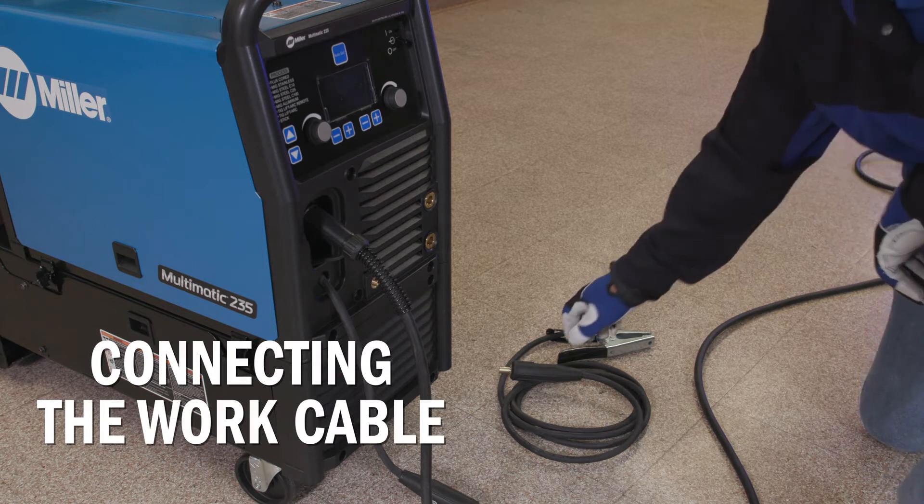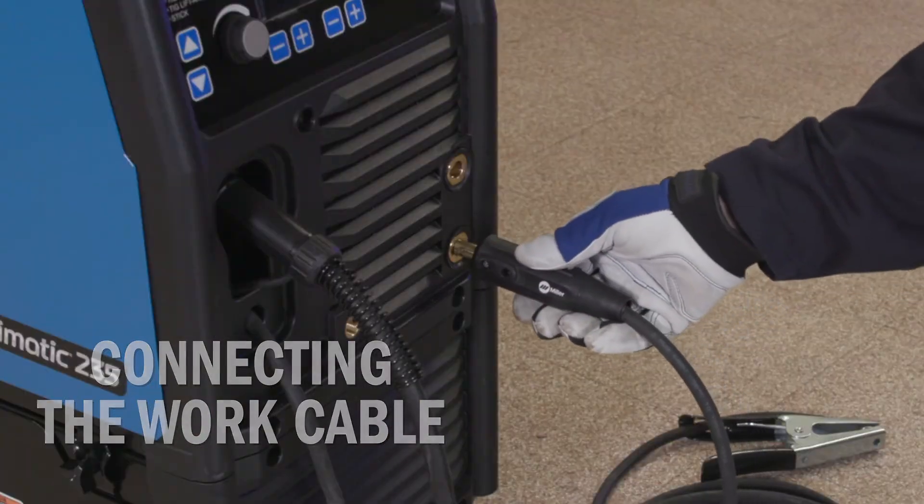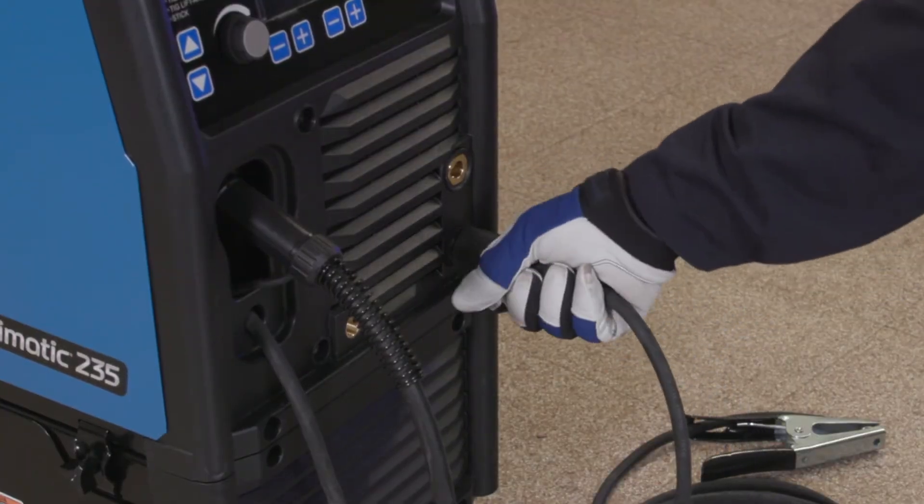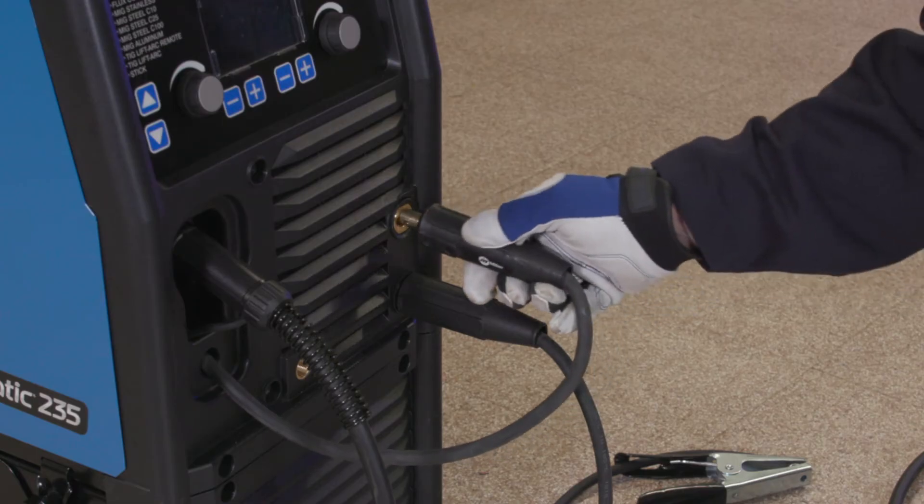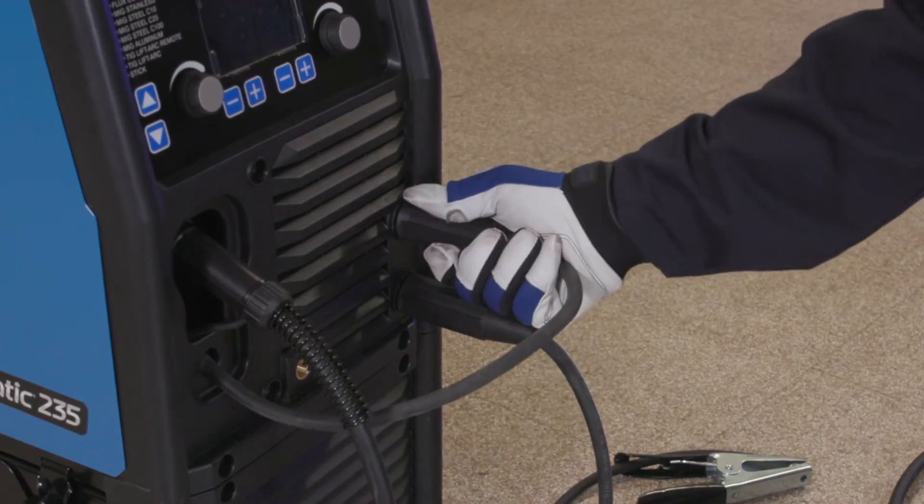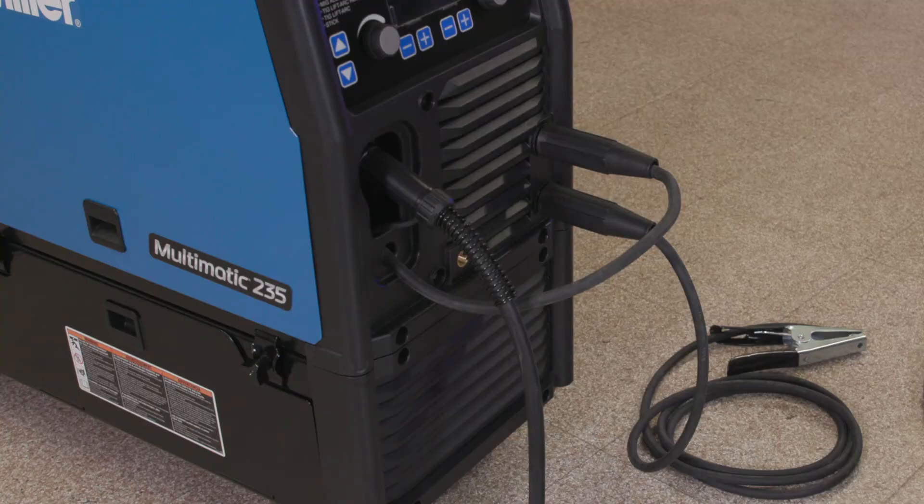While the machine is still off, insert the work cable into the negative receptacle and turn clockwise to tighten. Connect the drive lead into the positive receptacle and turn clockwise to tighten. Now the machine is set to DCEP or electrode positive.